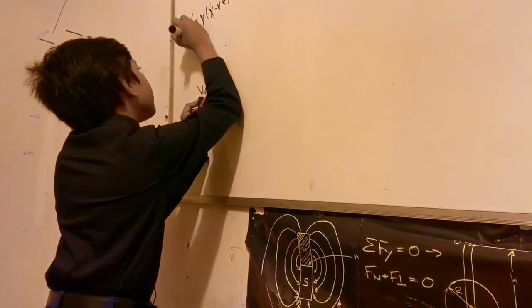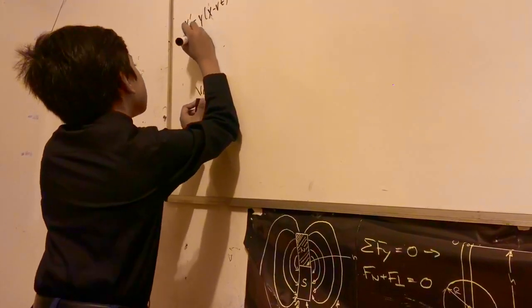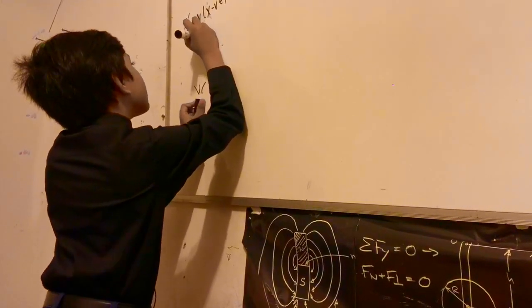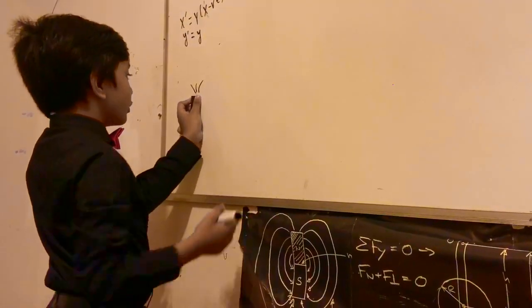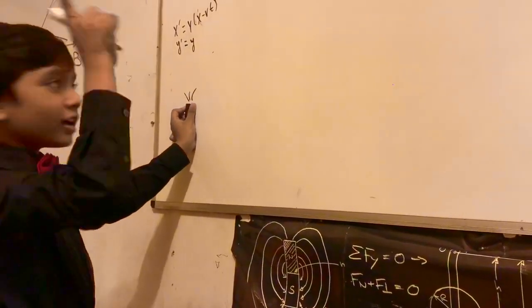And then we have Y prime, which is equal to Y if you're not moving in the Y direction, flying at the speed of light.